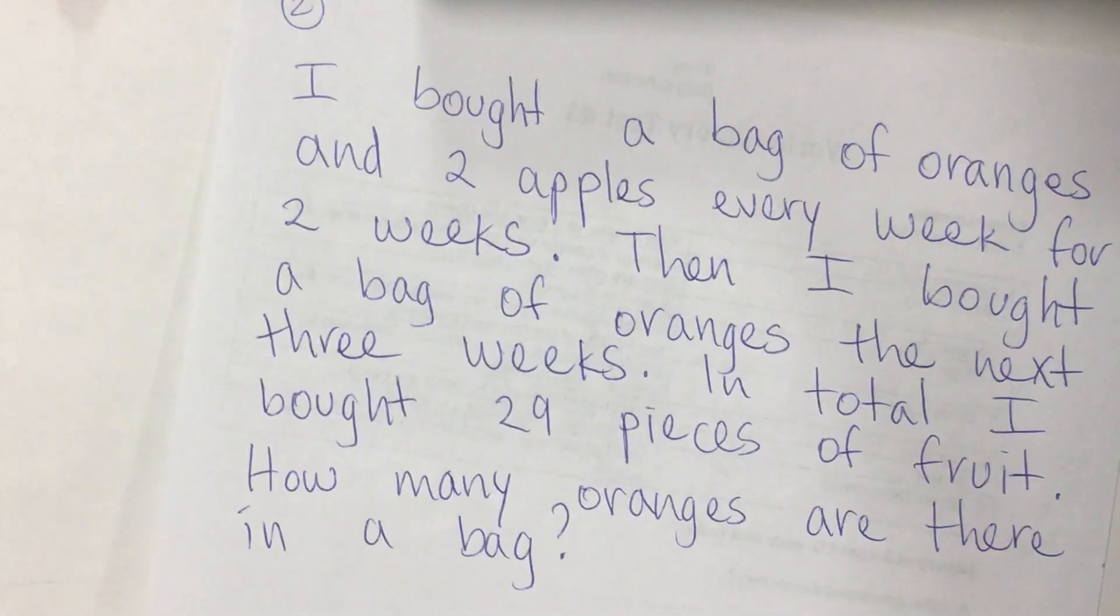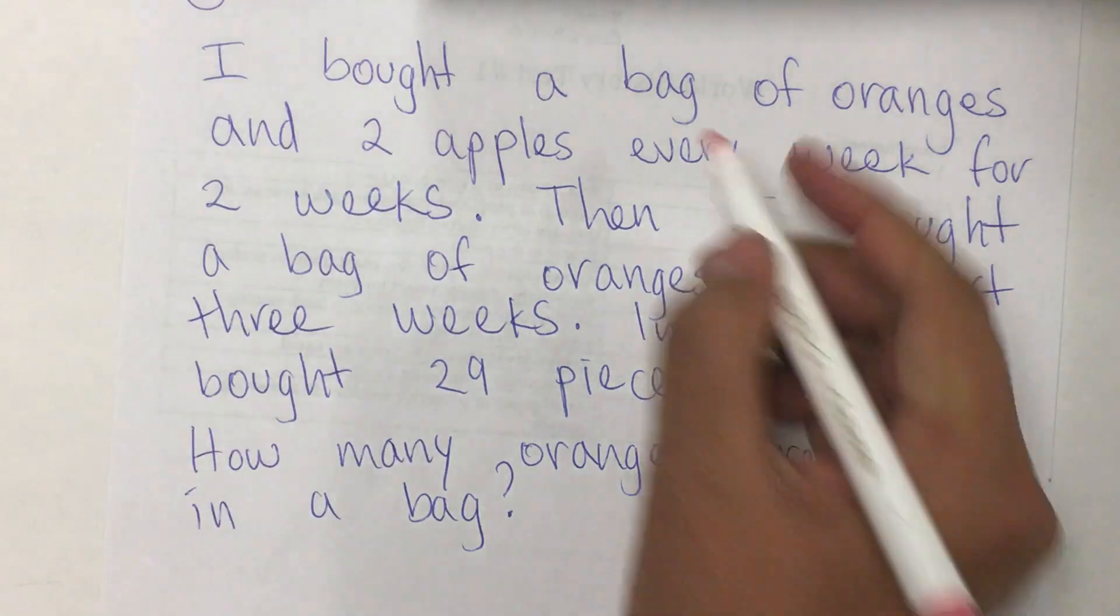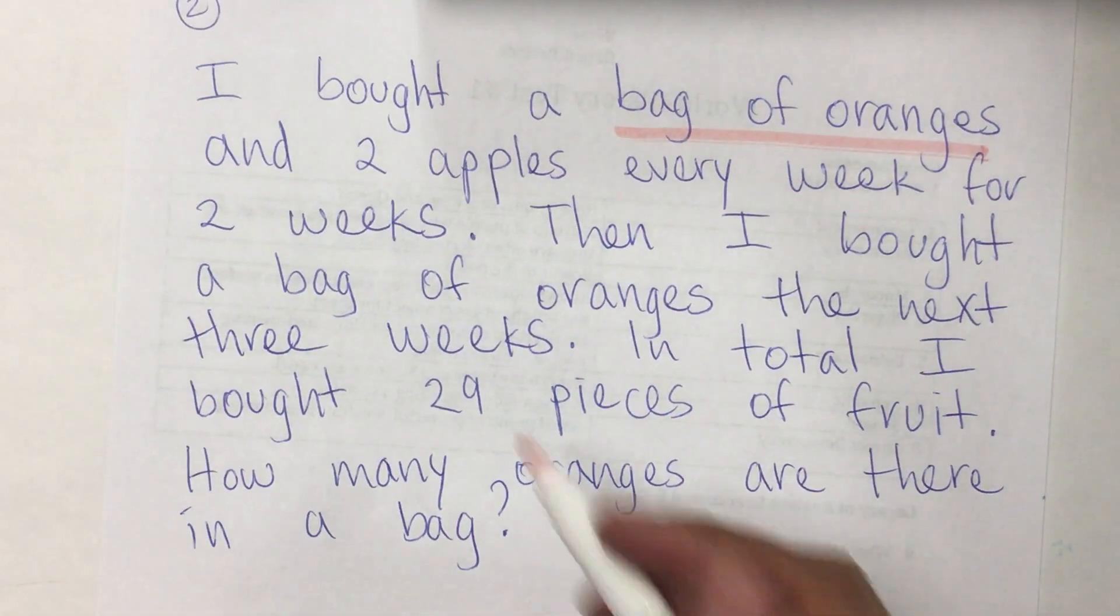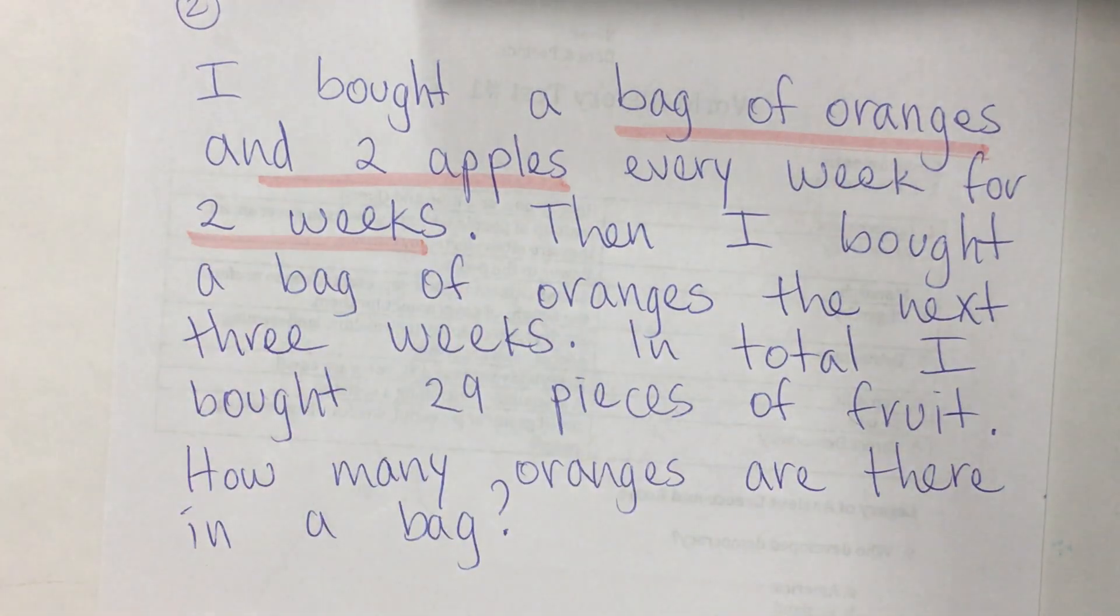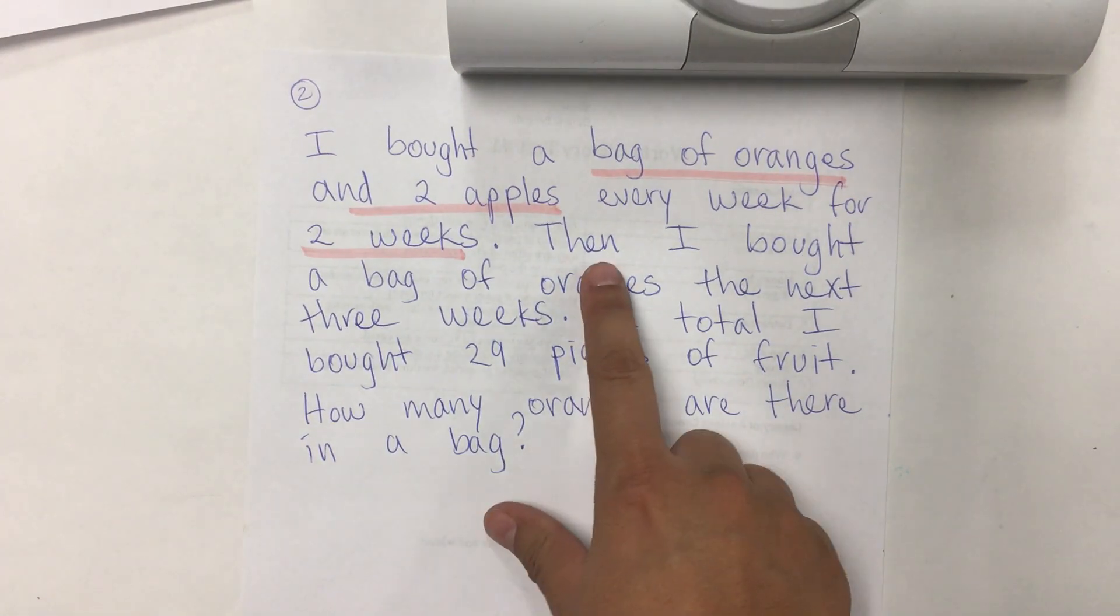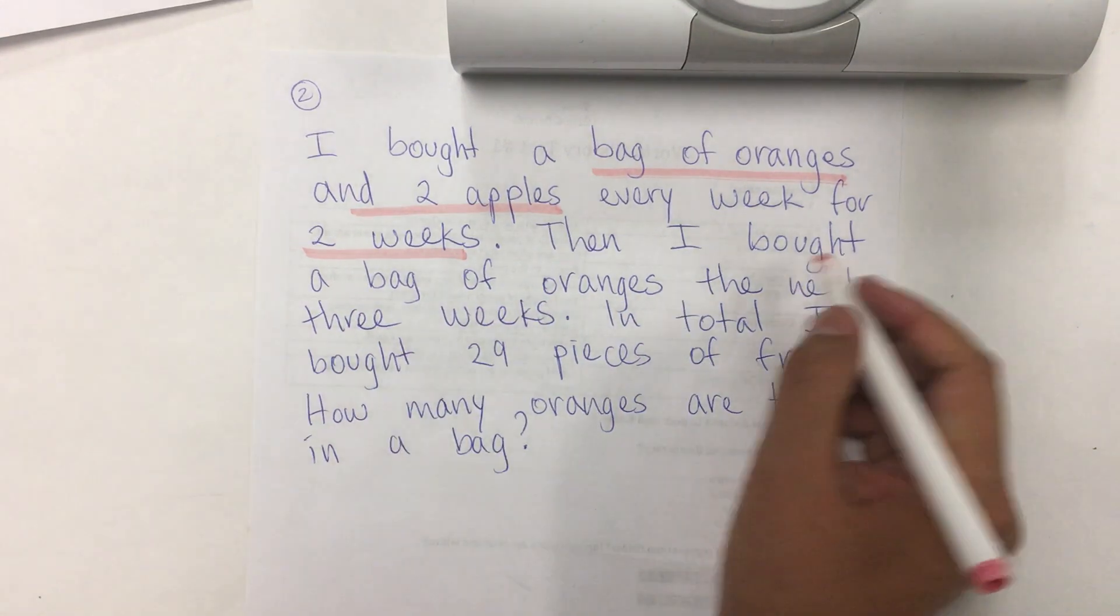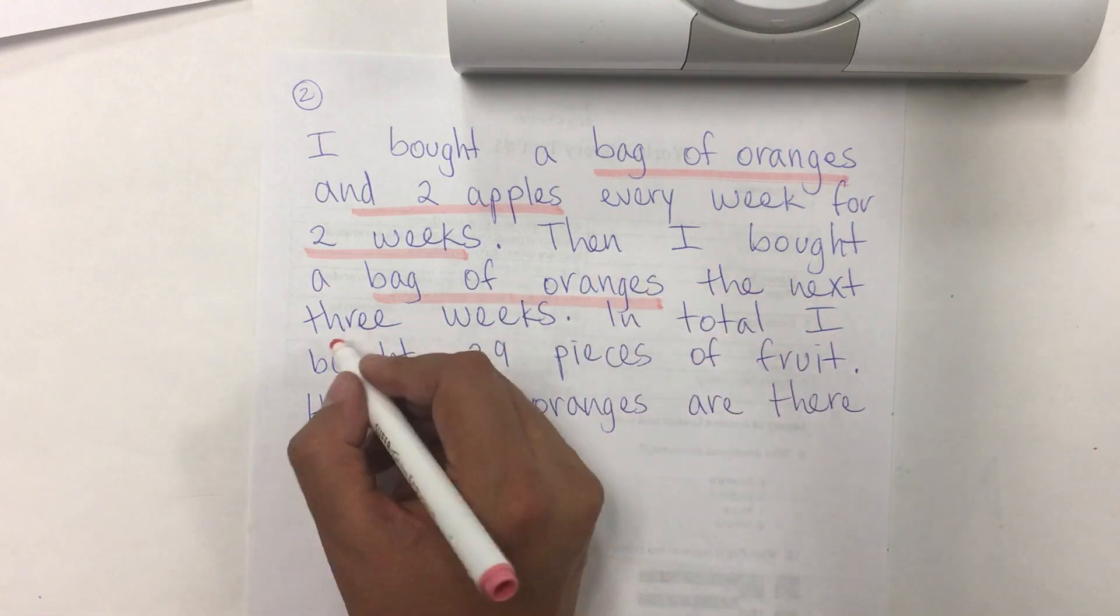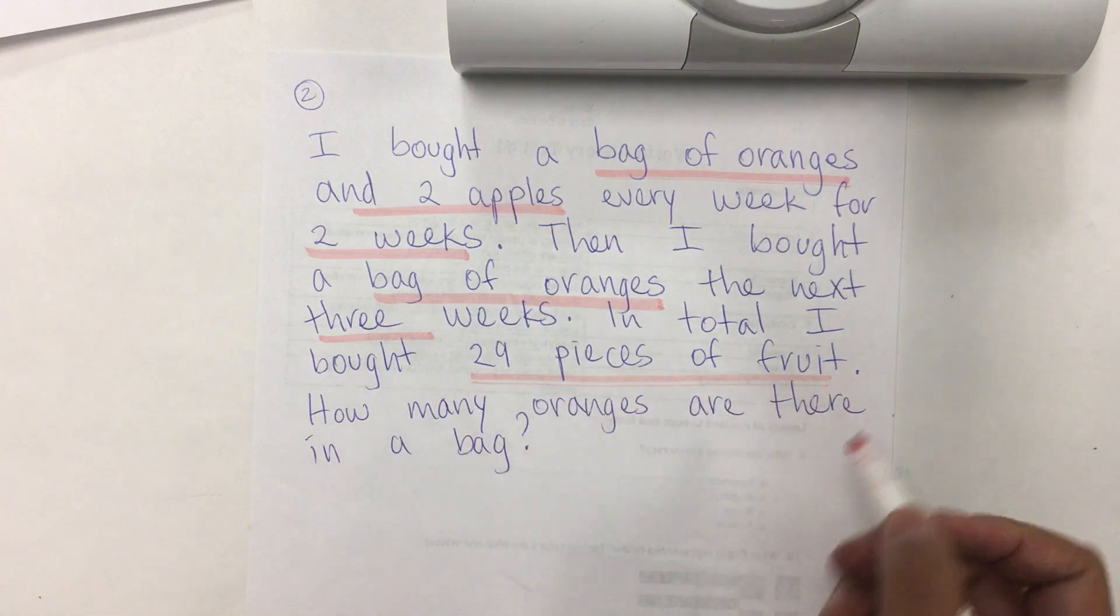Let's do another one. It says, I bought a bag of oranges and two apples. So, a bag of oranges. We don't know how many oranges in each bag. And two apples every week for two weeks. Then, I bought a bag of oranges the next three weeks. In total, I bought 29 pieces of fruit.